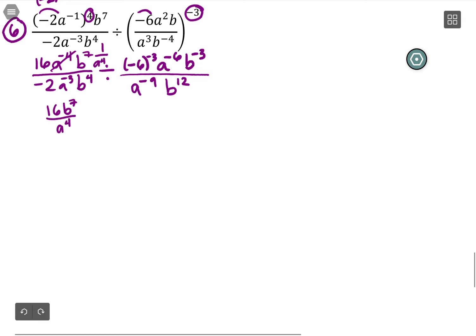On the bottom, the -2 and the b to the 4 are fine. a to the -3 is the same as 1 over a cubed, so we're going to get over a cubed.